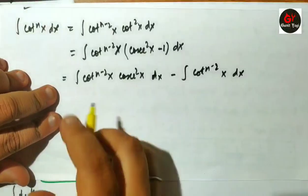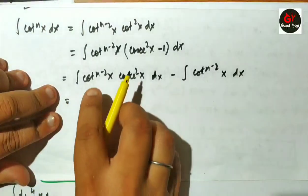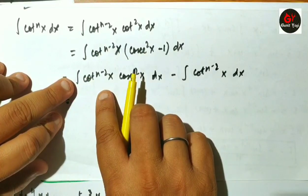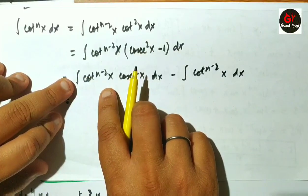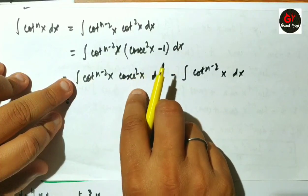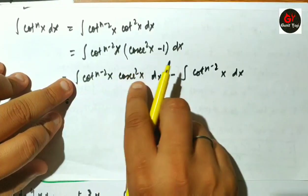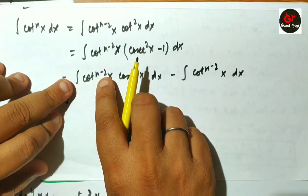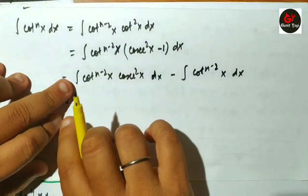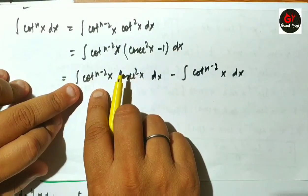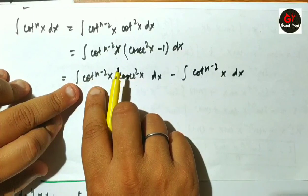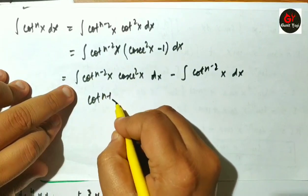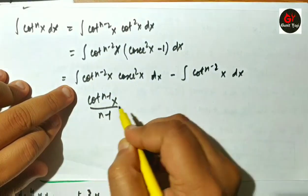Just like we did for tan, the same procedure we will apply here. To integrate this, we will use integration by substitution. Cot x is assumed to be t, so minus cosec squared x dx will be replaced by dt. With the minus sign retained, the term is replaced by t to the power (n-2) with a minus sign. This gives t to the power (n-1) divided by (n-1), and since t was cot x, this becomes cot to the power (n-1)(x) divided by (n-1).